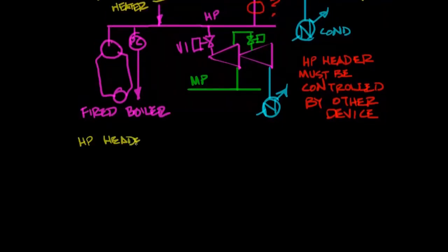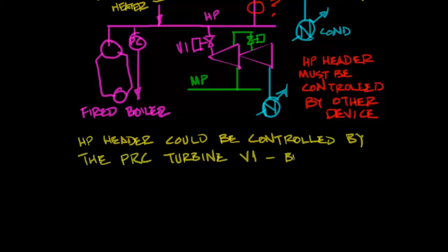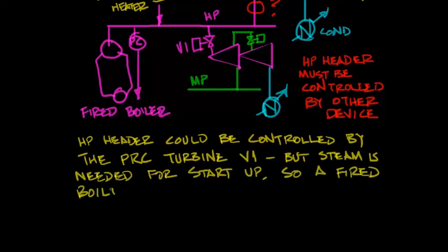It means that the HP header pressure has got to be controlled by some other device. We've got two valves on the CGC turbine. They're already busy doing something else. The HP header could be controlled by the PRC turbine V1, similar to what we do at the CGC.